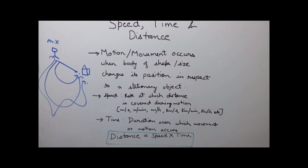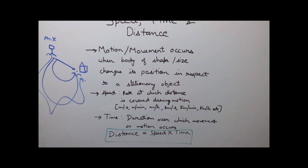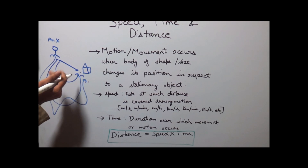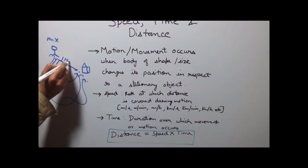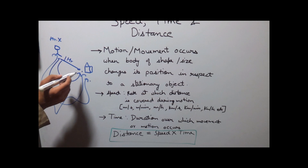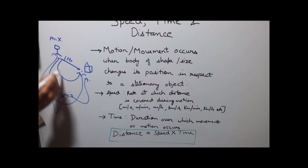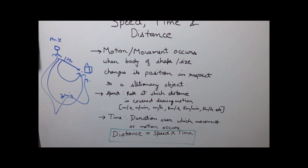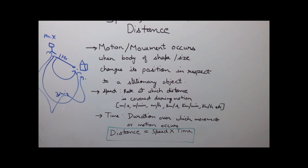Now what is speed? Speed is the rate at which the distance is covered during motion. This person can reach this building in an hour if he walks, or he can also reach this building in 30 minutes using a curved path if he uses a car. So speed is the rate at which the distance is covered.